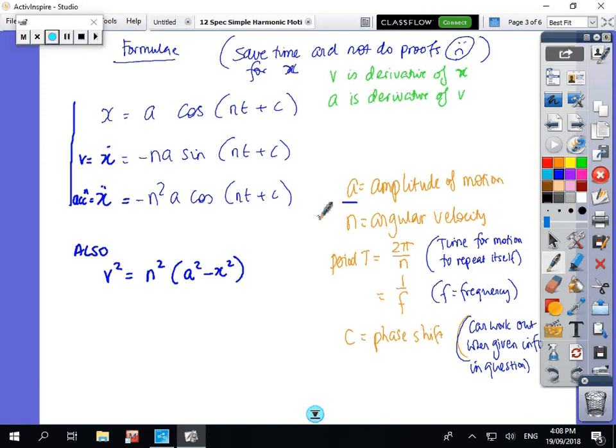This A here is not acceleration. This A here is the amplitude of the motion. So I've got X, X dot, X dot dot. Here's the formulas that we're going to use: displacement is A cos(Nt + C), velocity is -Na sin(Nt + C), and acceleration is -N² A cos(Nt + C). I've just derived X to get V and then derive V to get A.